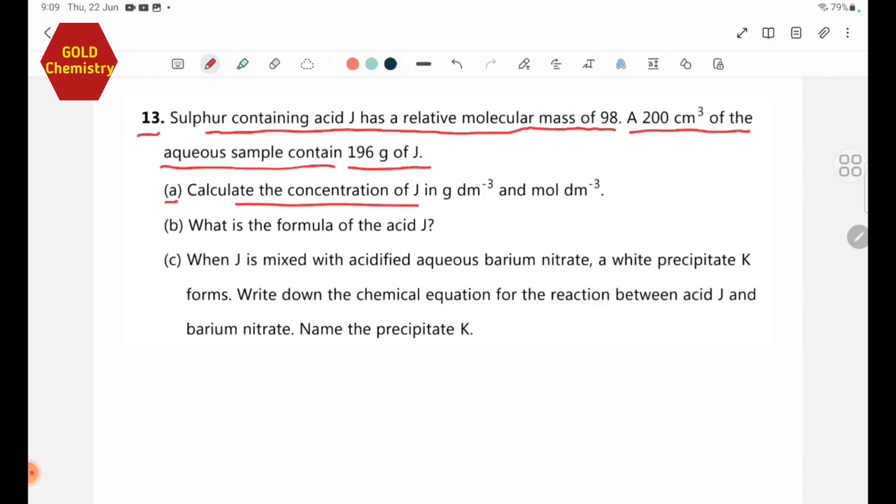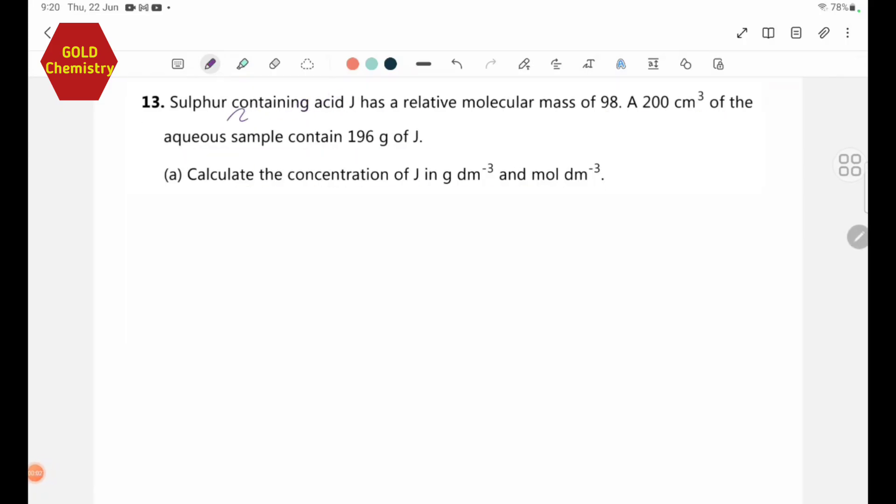Part A: Calculate the concentration of Z in grams per dm³ and moles per dm³. Part B: What is the formula of the acid Z? Part C: When Z is mixed with acidified aqueous barium nitrate, a white precipitate K forms. Write down the chemical equation for the reaction between acid Z and barium nitrate. Name the precipitate K.